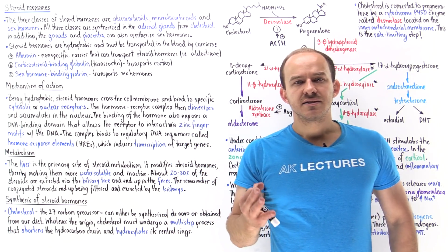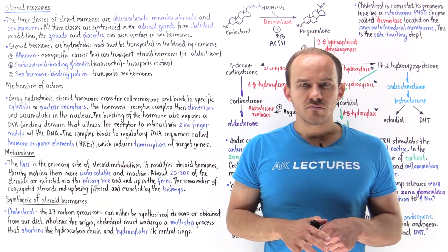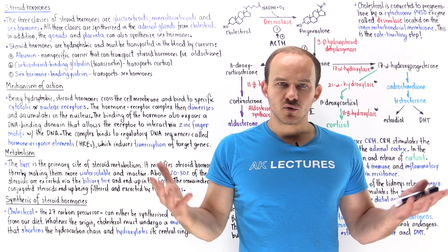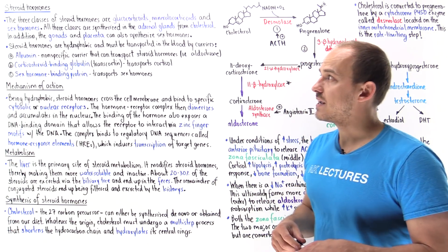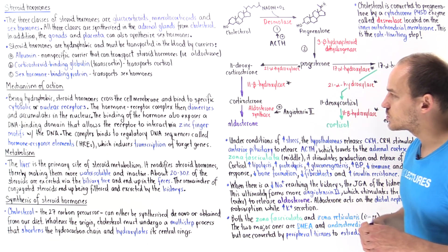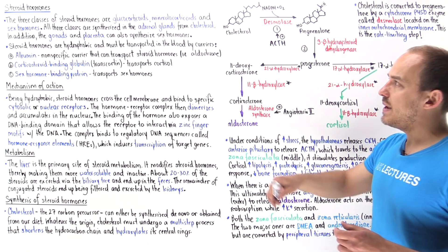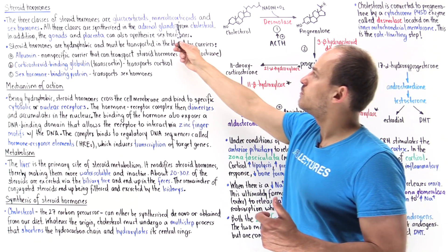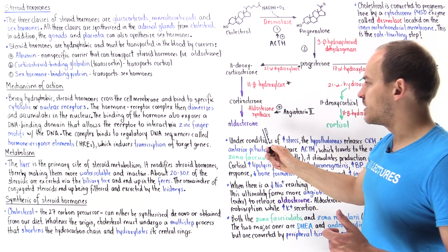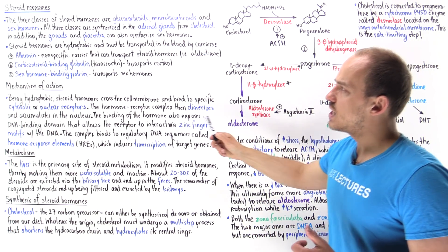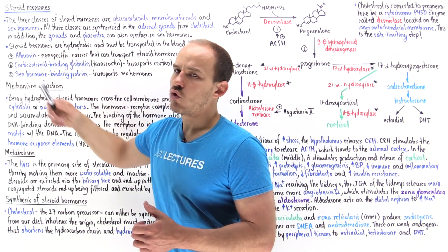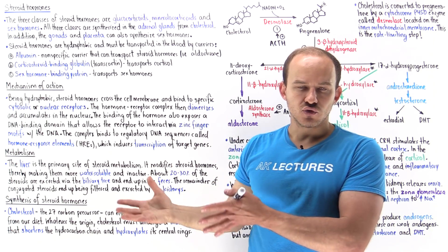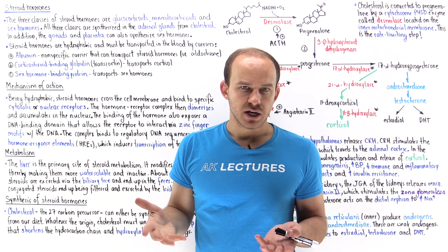The three major classes of steroid hormones are the glucocorticoids, the mineralocorticoids, and the sex hormones. The major glucocorticoid is cortisol, the major mineralocorticoid is aldosterone, and the sex hormones are the androgens, the estrogens, and the progestins.